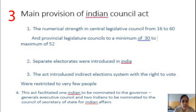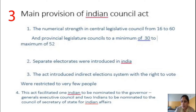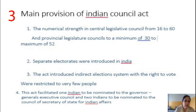The second provision was that separate electorates were introduced in India. They provided a general electorate, class electorate covering landlords and Muslims, and also chambers of commerce. This separate electorate system was a key feature introduced by the Indian Council Act.